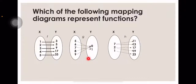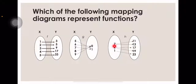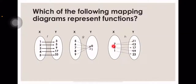Remember: when it is 1-to-1 or many-to-1, that is a function. The third mapping diagram shows that the value 7 in set X maps to two Y values — 11 and 13. This is called 1-to-many. When it is 1-to-many, that is not a function. As you can see, the number 7 has two values in Y, and the number 2 also has two values in Y. So this is not a function.